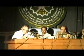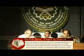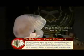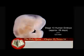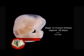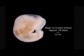Surah Al-Mu'minun, ayah 14: 'Then we created the drop into a leech-like structure, then of that leech-like structure we made a chewed-like substance,' which you can see here. This chewed-like substance stage begins during the sixth week.